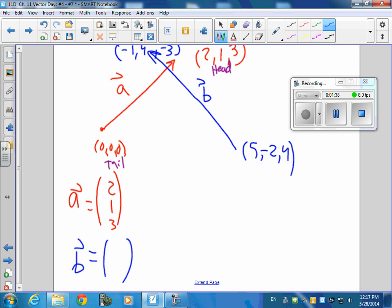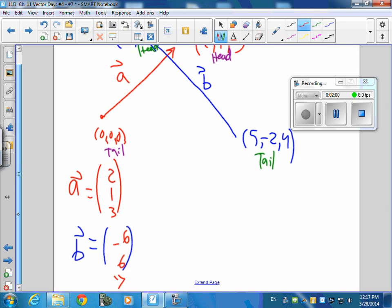So, you go head minus tail. So, here's the head up here, head, here's the tail. Well, so you're right, negative 6, right? And what will the next one be? 6, and what will the negative 7, yeah. So, a little bit off track there, but so those are my A and B.